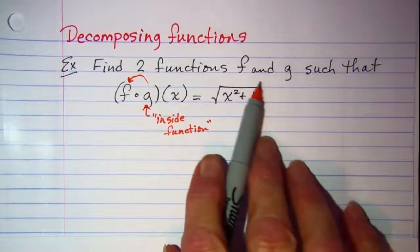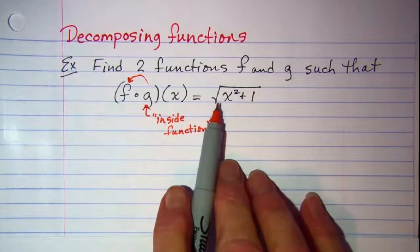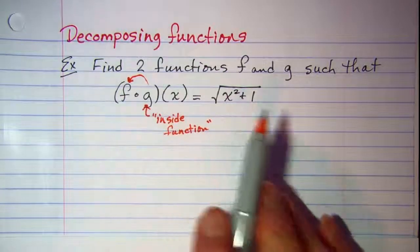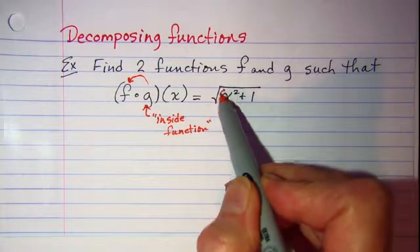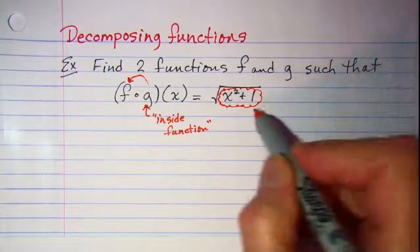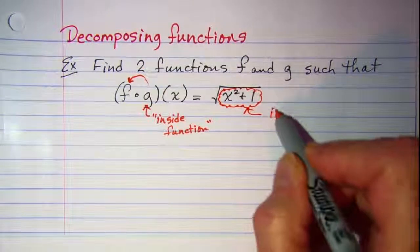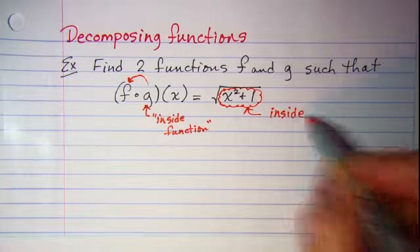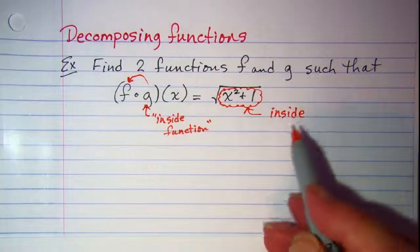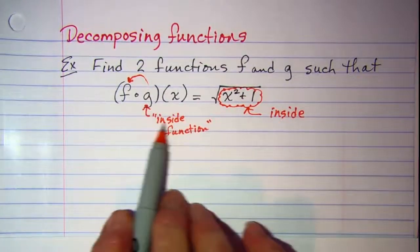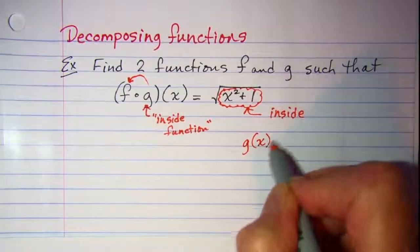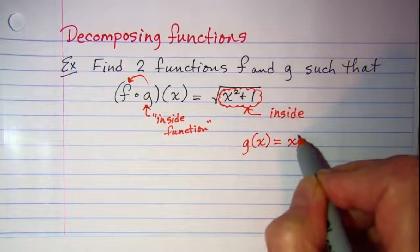Now if we look at this expression, what we want to do is think about what is inside and what is outside. This radicand needs to be considered the inside and then the radical will be the outside. So since g is my inside function, g of x needs to be x squared plus 1.